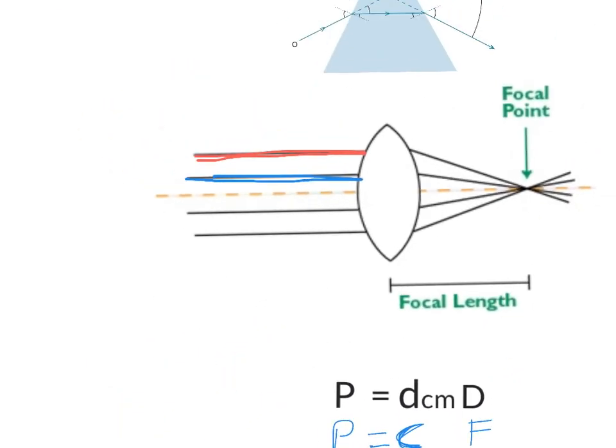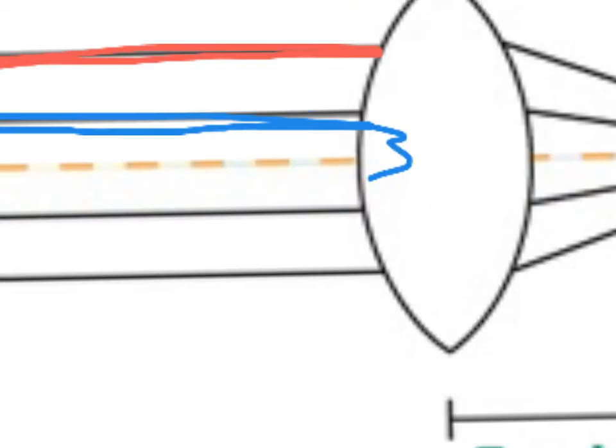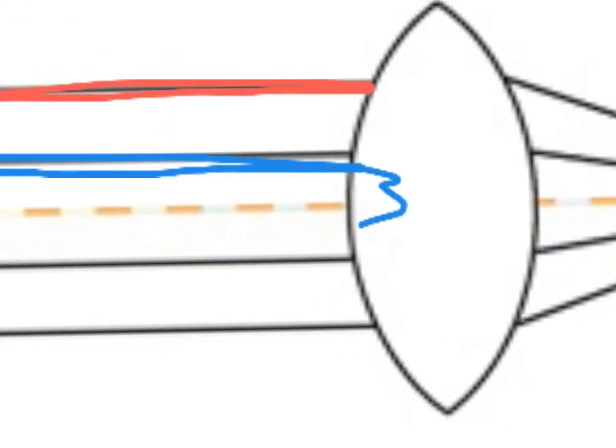The d is the distance from the light ray to the optical center. So for example, this distance here, let me just zoom in a little bit, this distance here is d between the blue light ray and the optical center. And then this distance here between the red light ray and optical center is d.